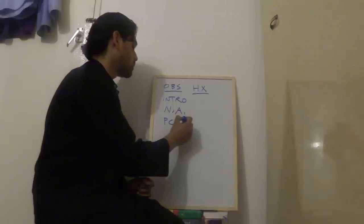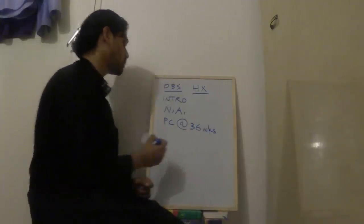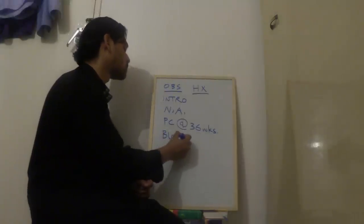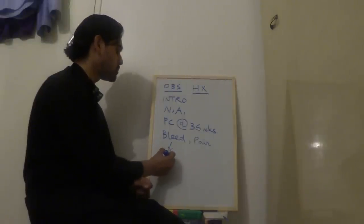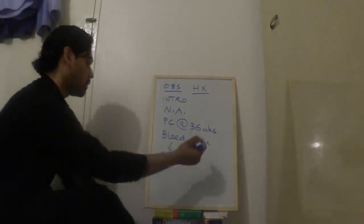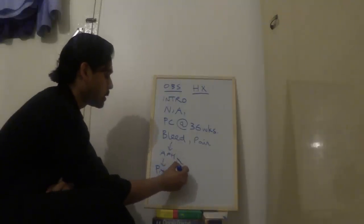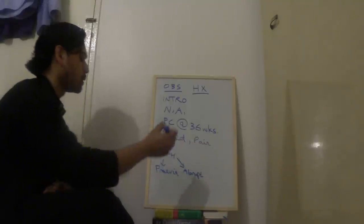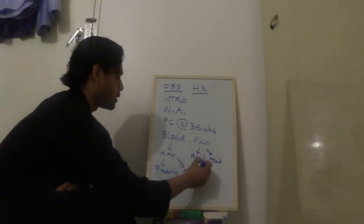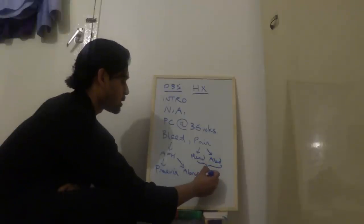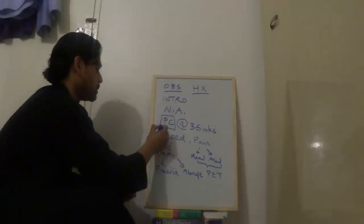So the presenting complaint in a pregnant woman who is, let's say, 36 weeks pregnant — she's going to have bleeding or pain most likely. Bleeding can be due to antepartum haemorrhage, which can be caused by placenta praevia or placental abruption. Pain such as headache or abdominal pain — both can be due to preeclampsia; you can get epigastric pain with preeclampsia. So the presenting complaint can be bleeding or pain.